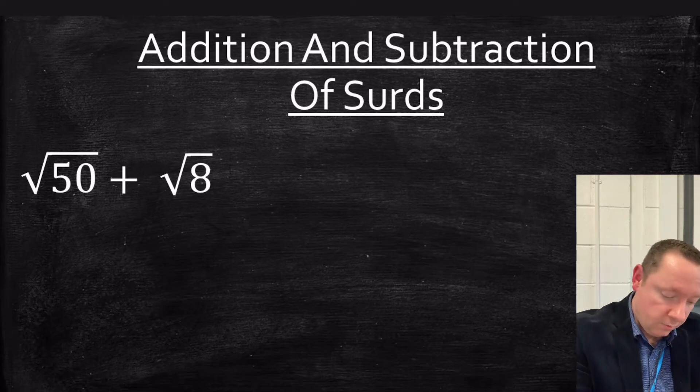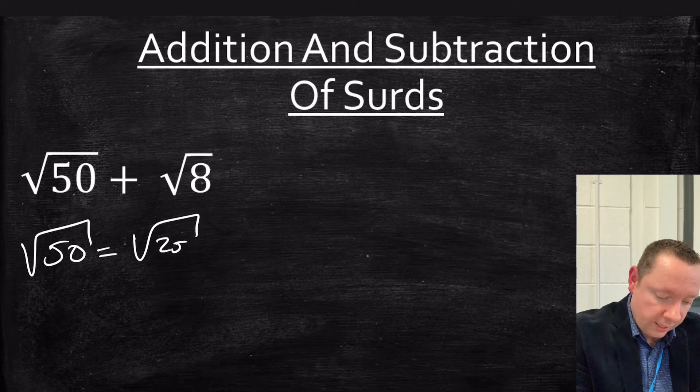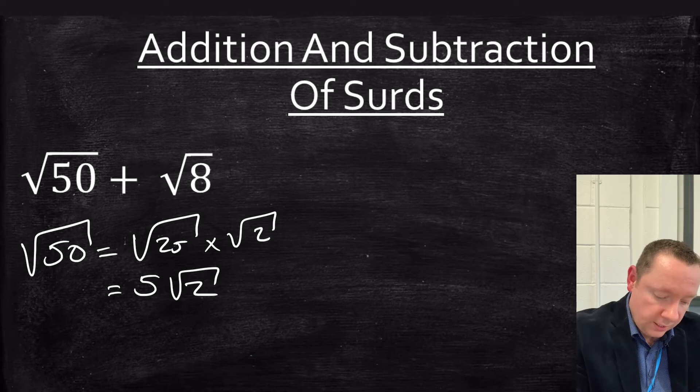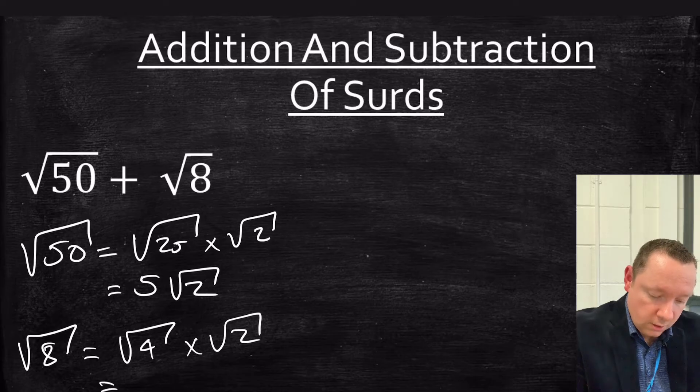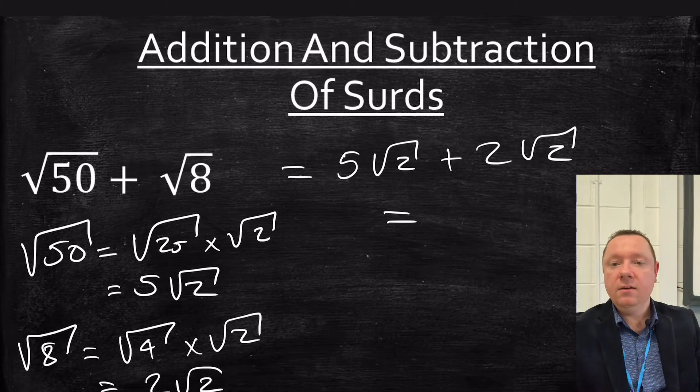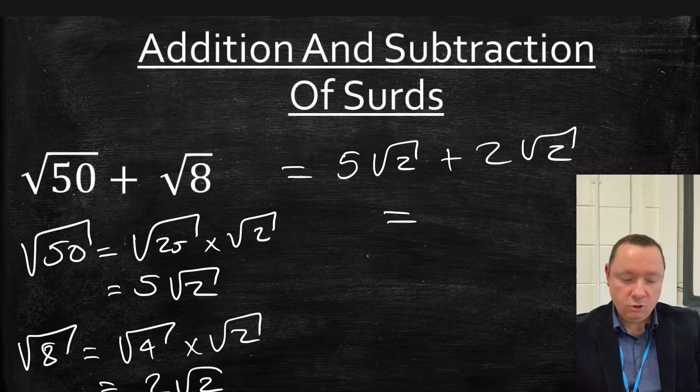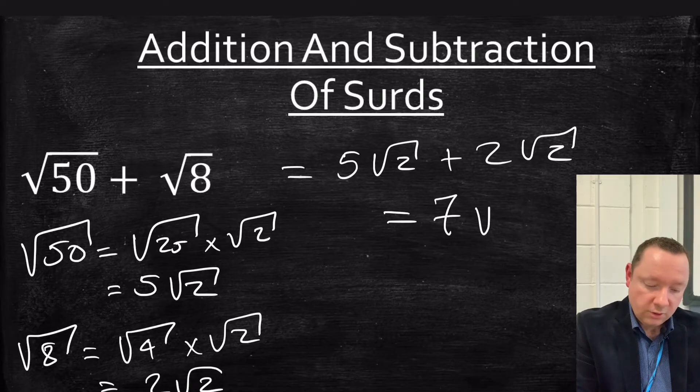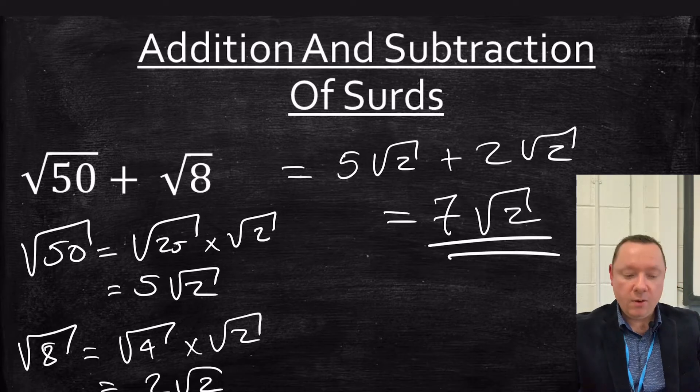Root 50 plus root 8. Let's simplify root 50, that is 25 times 2, which gives me 5 root 2. Let's do the same thing with root 8. That is 4 times 2, square root of 4 is 2, so that's 2 root 2. So this whole sum becomes 5 root 2 plus 2 root 2. 5 root 2 and another 2 root 2 make 7 of them. So I've got 7 root 2 in total and we're done.